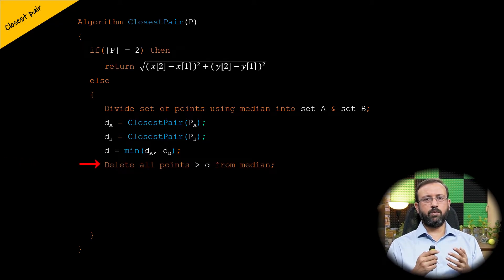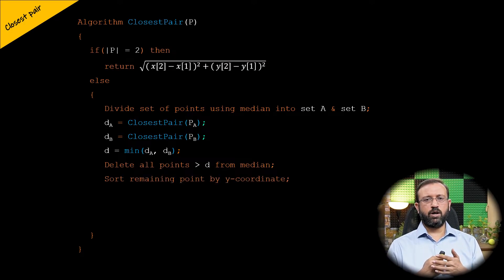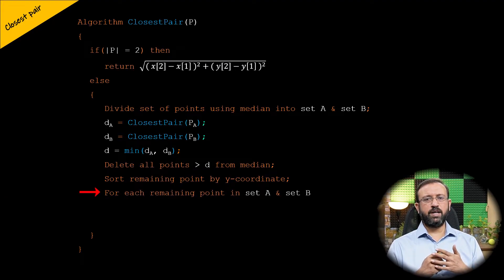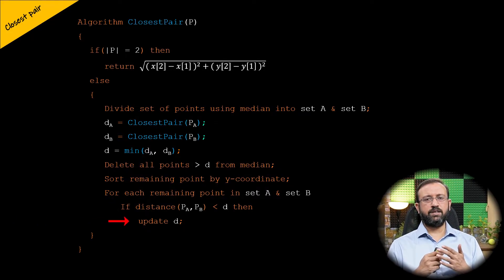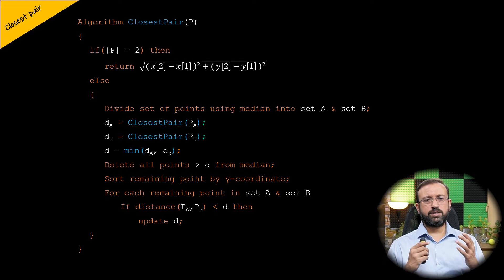Then remove all points greater than distance d from the median and sort the remaining points by y-coordinate. For each remaining point in set A, compare the distance to its neighbors in set B that lie within the comparing region. If the distance is less than d, update d. This completes the closest pair algorithm using the divide and conquer strategy.